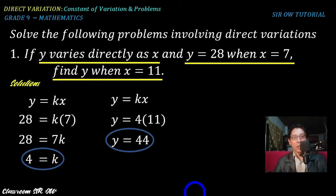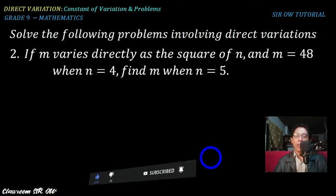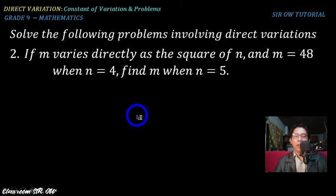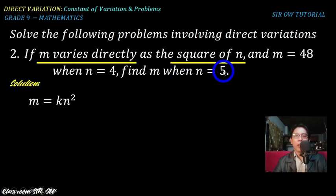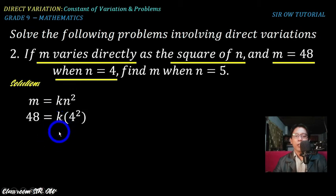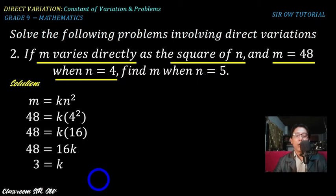Problem two: if m varies directly as the square of n, and m is 48 when n is 4, find m when n is 5. Since m varies directly as the square of n, we write m = kn². Be careful with the word 'square.' Substituting m = 48 and n = 4, we get 48 = k(4²) = 16k. Dividing both sides by 16, we get k = 3. So the constant of variation is 3.